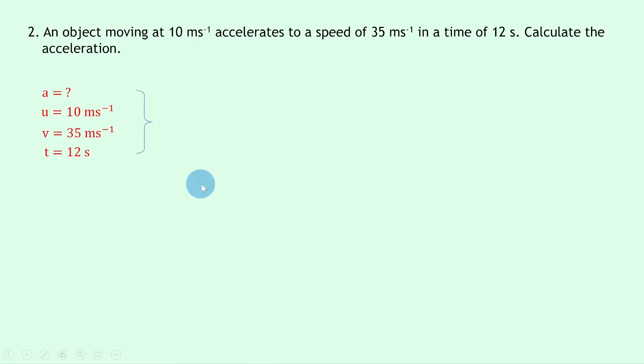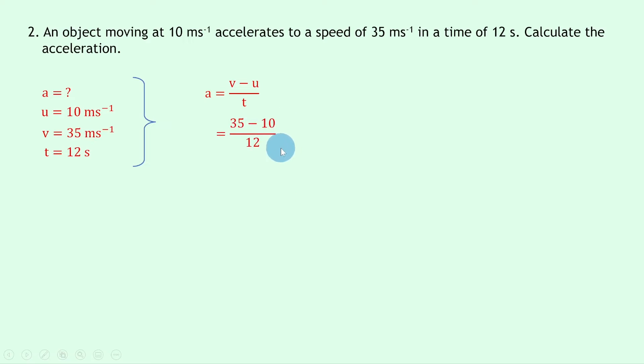Writing down our equation, we have a equals v minus u over t. Substituting in the numbers gives us 35 minus 10 divided by 12, and putting the answer into a calculator should give you 2.1 meters per second squared.